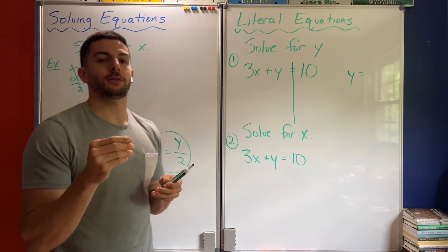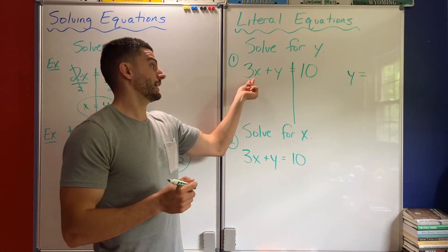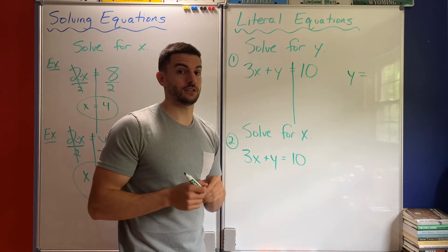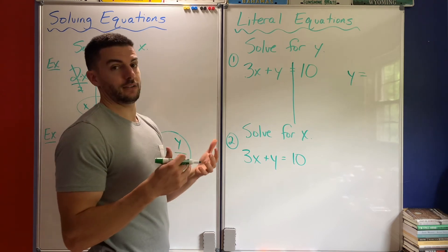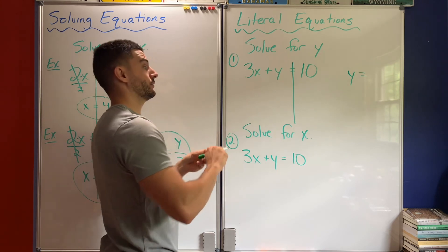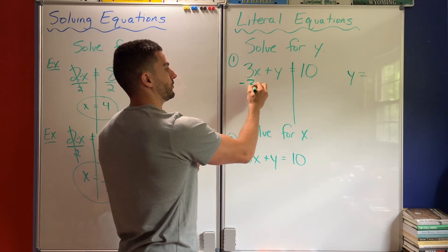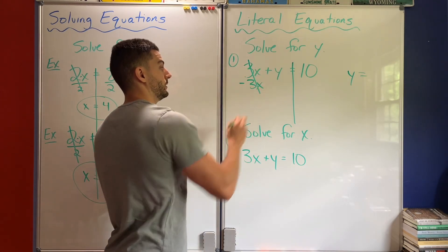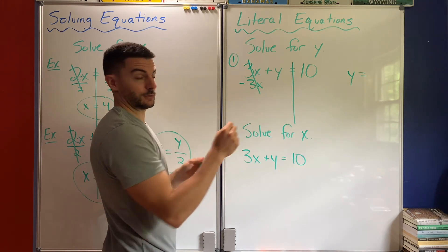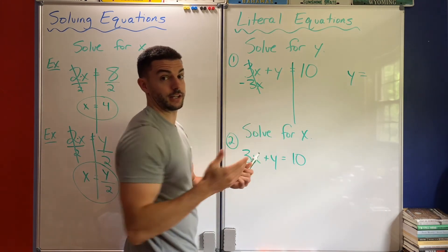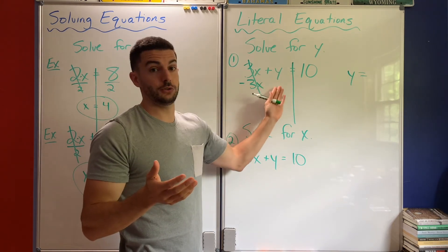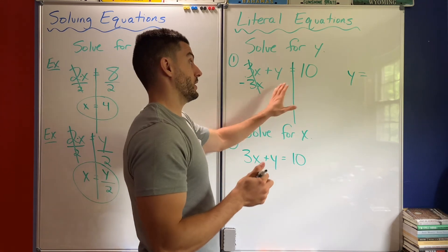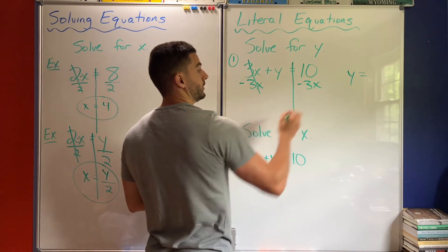It's all about how terms are connected to the variable you want to solve for. Here it says 3x plus y — it's connected with addition, not multiplication or division. It's positive 3x, so I need to subtract 3x to cancel that. 3x minus 3x is 0x, so that cancels. But then the algebra rule says what I do to one side I have to do to the other side, because an equation means both sides are equal and in balance.